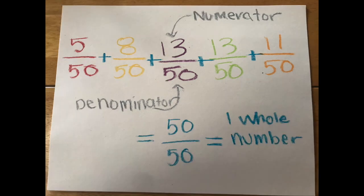This number remains the same. Add together all of your numerators. It should equal your denominator. All of your parts should equal the whole.